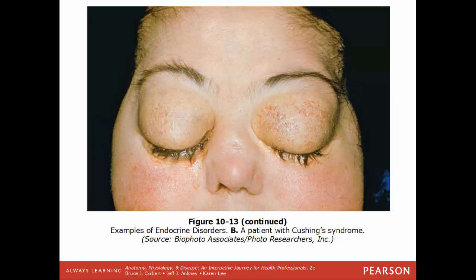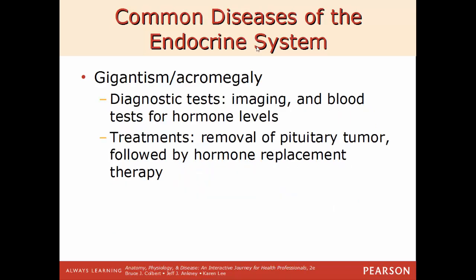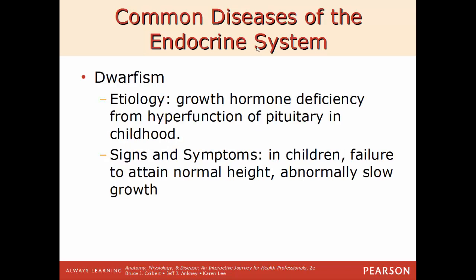Images shown include: an infant with congenital hypothyroidism, a patient with Cushing's syndrome, and a patient with gigantism. Gigantism etiology is excess growth hormone from pituitary hyper-function or tumor. In children, overgrowth of long bones results in excessive height; in adults, excess growth hormone causes deformity of body tissues — thicker bones altering the shape of the skull and face, deepening voice, and impacting heart rate, breathing rate, and muscle strength. Diagnostic tests include imaging for pituitary tumors and blood tests for hormone levels. Treatment is removal of the pituitary tumor followed by hormone replacement. The opposite condition, dwarfism, has etiology of growth hormone deficiency of the pituitary in childhood; signs include failure to attain normal height and abnormally slow growth; treatment is early diagnosis and growth hormone injections.